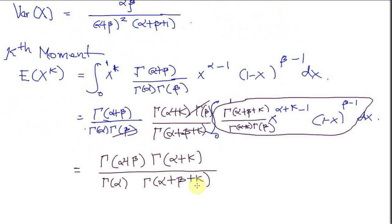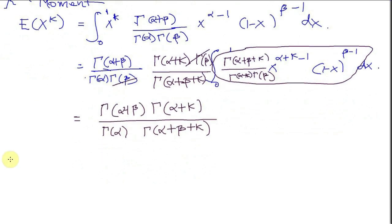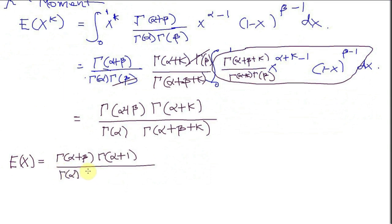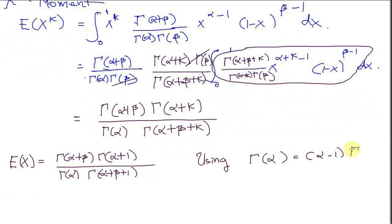That is the general expression for the kth moment. Now I can plug in 1 for k to find the first moment. That will be gamma of alpha plus beta times gamma of alpha plus 1, divided by gamma of alpha times gamma of alpha plus beta plus 1. I can use the property of the gamma function discussed in the gamma distribution lesson: gamma of alpha equals alpha minus 1 times gamma of alpha minus 1, for any alpha greater than 0.